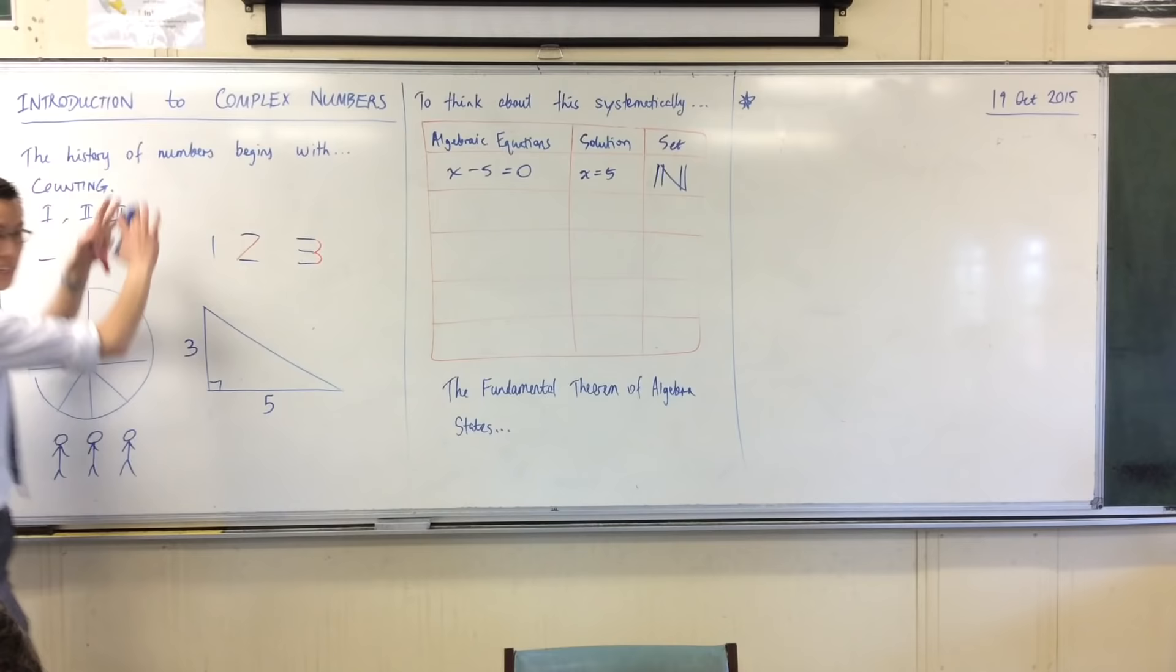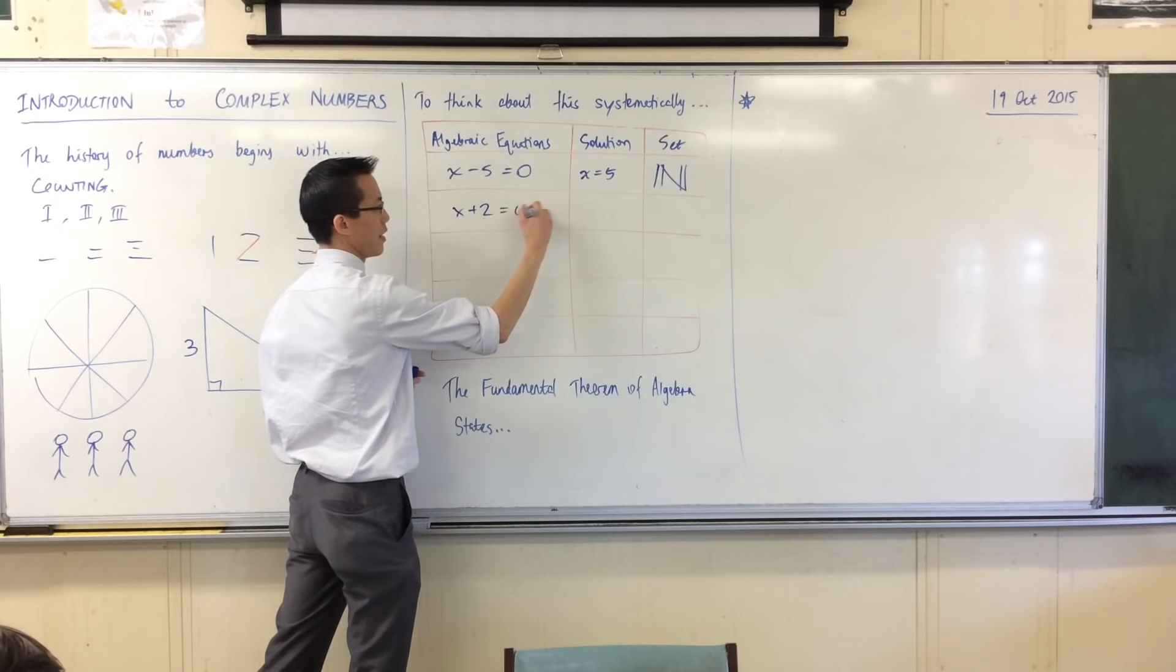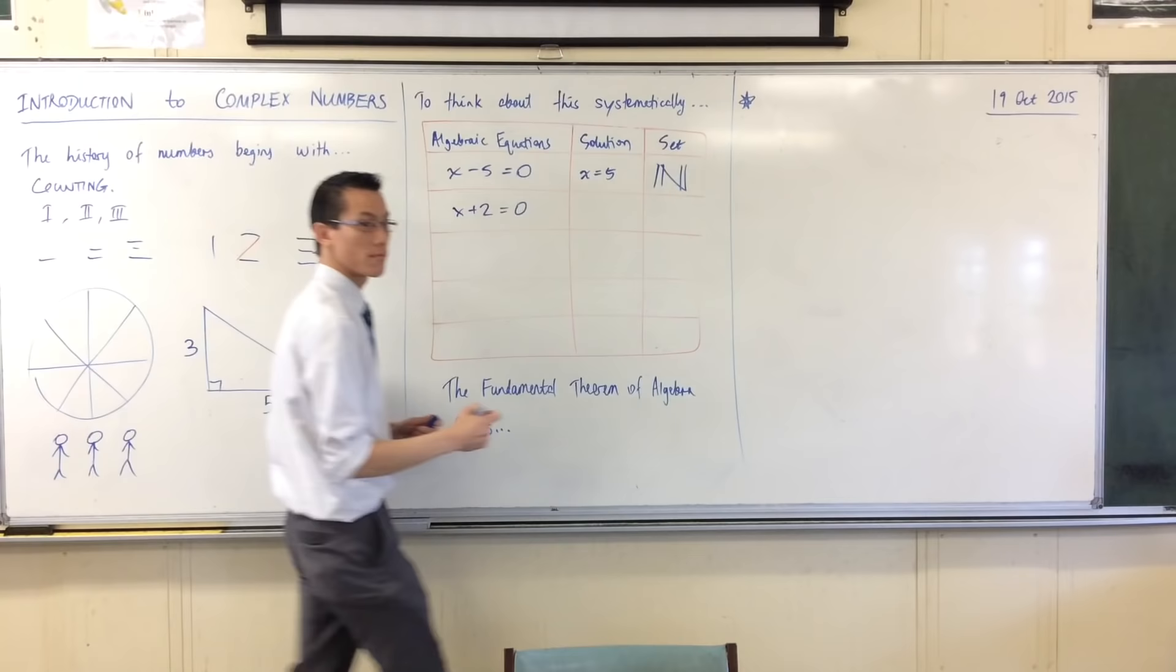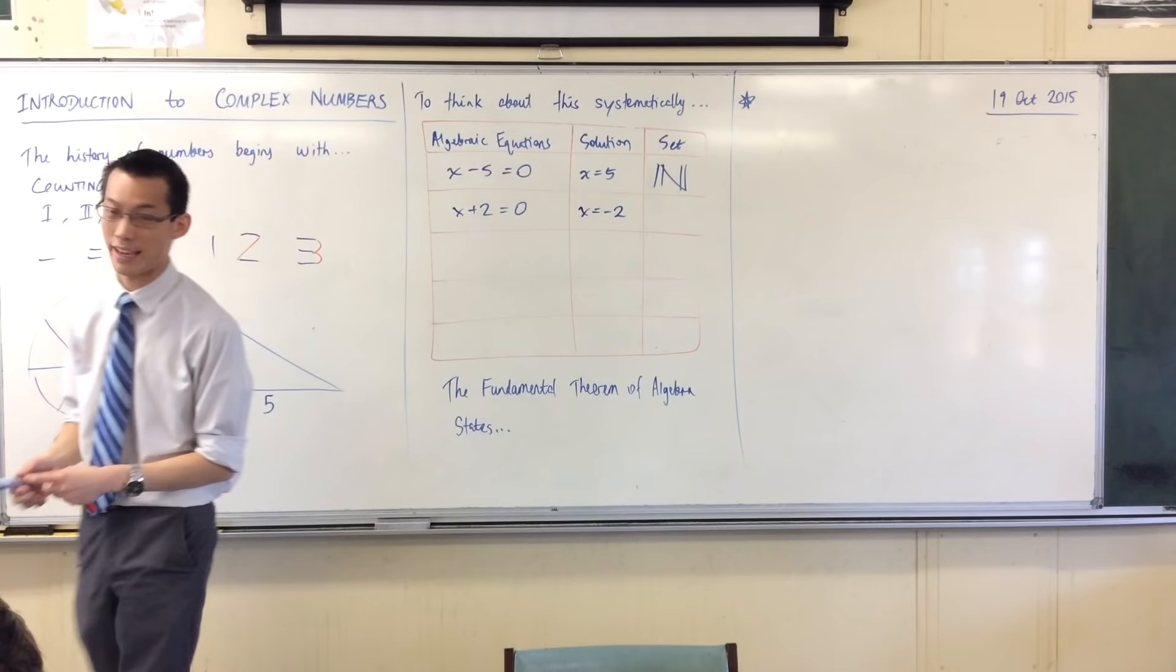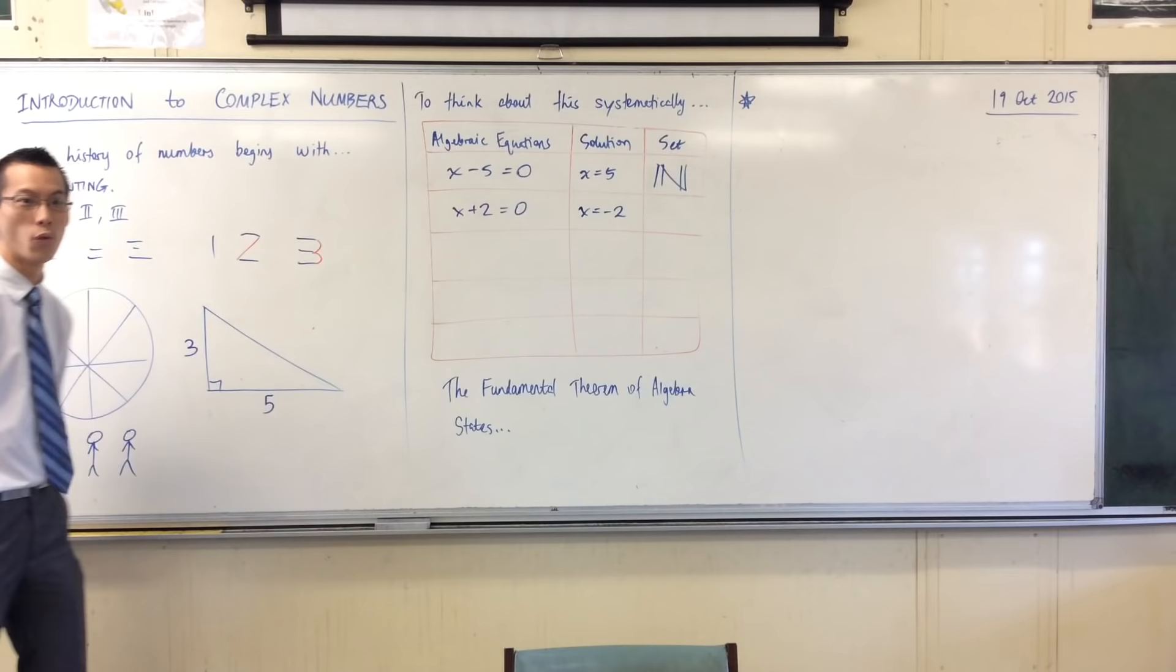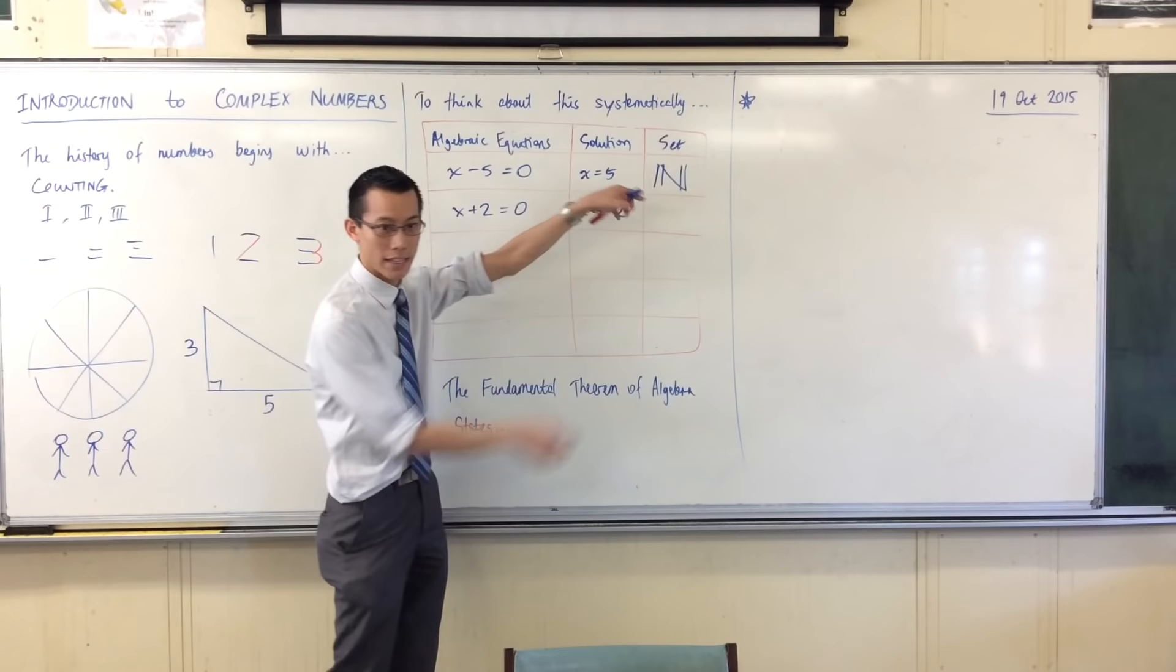But, it's pretty easy to get out of the counting number world. For instance, if I give you an equation like this, which is just as simple, x plus two equals zero. What's the solution? X equals negative 2. So, we are, pretty quickly, like, I haven't even gone past addition and subtraction, I'm out of the counting number world already. Now, negative 2 is not a counting number. It's not a natural number in the technical sense of the word.